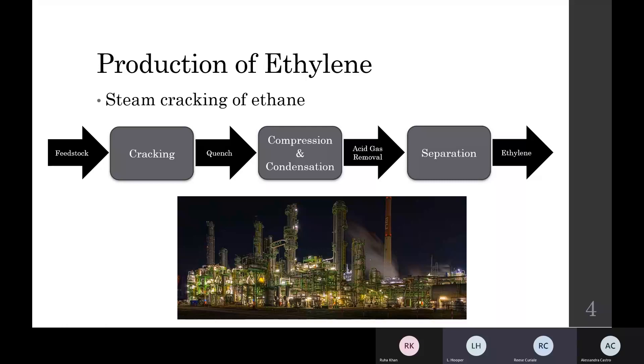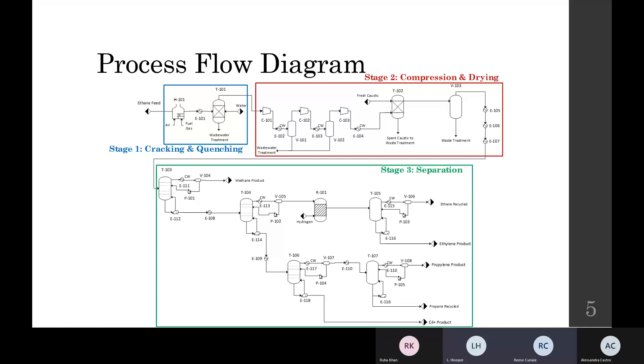Ethylene will be produced through the steam cracking of ethane. This process can be broken down into three stages: cracking and quenching, compression and drying, and separation. These stages are highlighted on the PDF for further context into the magnitude of the process.